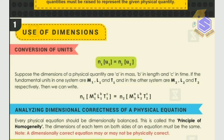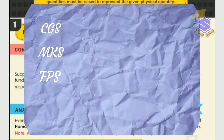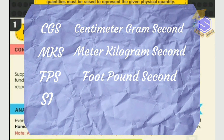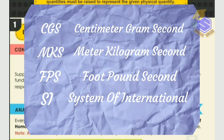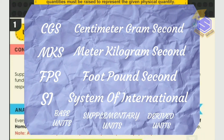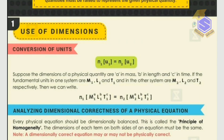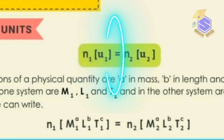Now we will see the uses of dimensional analysis. First, it is used for conversion of units — that means converting one system of units to another. There are generally four systems of units: CGS system, MKS system, FPS system, and the SI system currently in use. Their abbreviations are: CGS — cm, g, second; MKS — m, kg, second; FPS — foot, pound, second; SI — System of International Units. To convert, use the formula n₁u₁ = n₂u₂, where n₁ and n₂ are the numerical values and u₁ and u₂ are the dimensions in the respective systems.